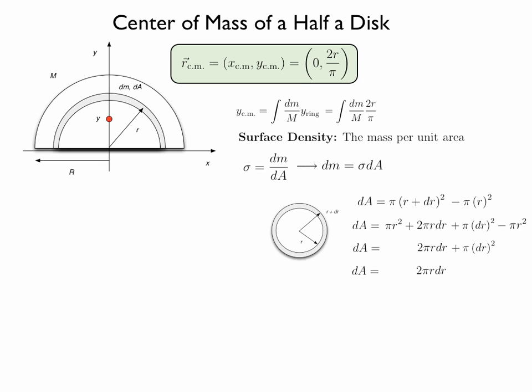For our case we actually have half a ring, and so we will have to consider only half of this value. Going back to the mass of the ring equals to sigma dA, we write now that is equal to sigma pi r dr. Remember it's half of our result for the whole ring.